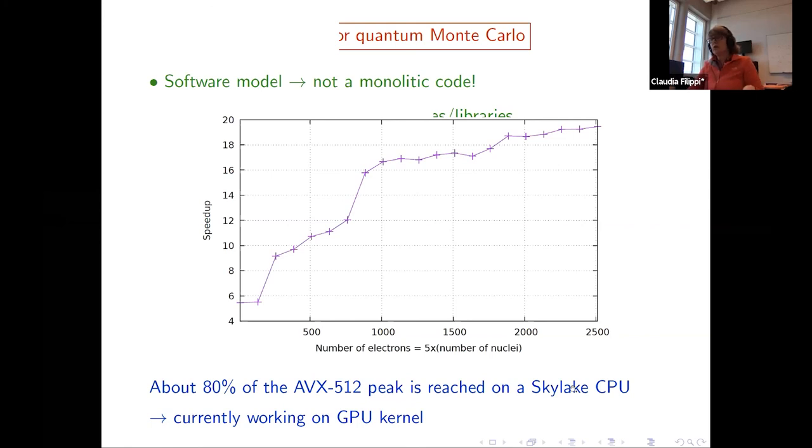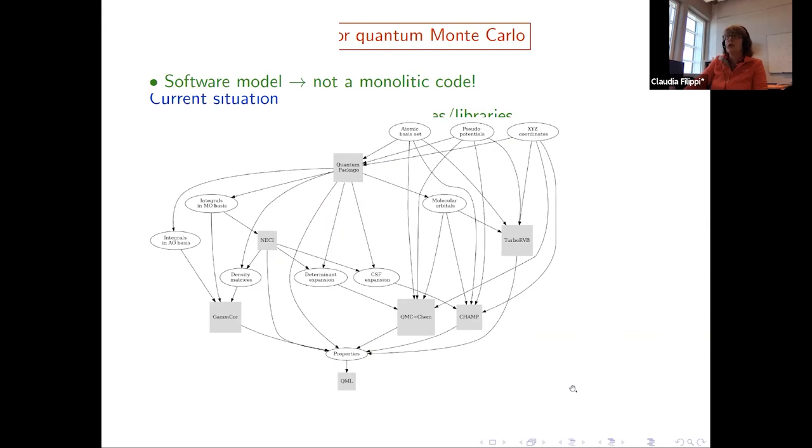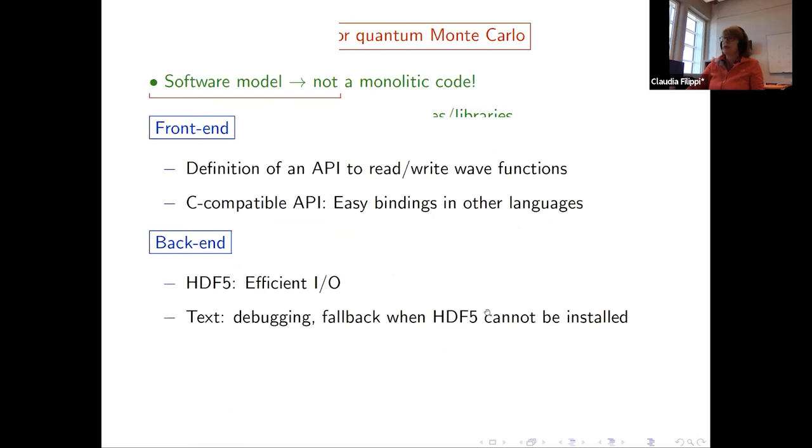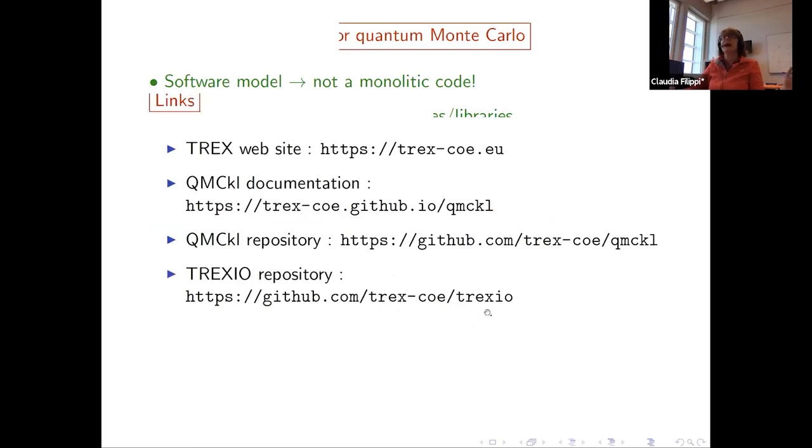And we are currently working on the GPU implementation. And as I said, the T-Rex IO is to avoid the current situation we are having with exchanging information between codes and redundance and going to a situation where we're having one format and all the codes are talking to the same format. The front-end and back-end we're going to discuss. And these are the links for your interest. And I thank you for your attention. I'm sorry for being over time. But not seeing people is hard. Yeah, thank you.